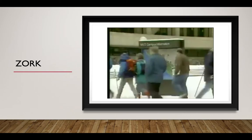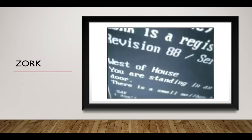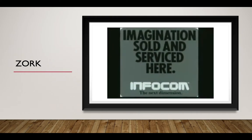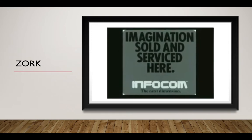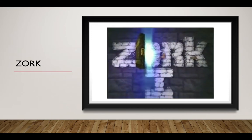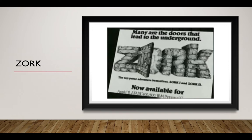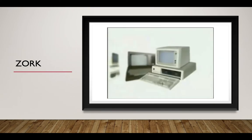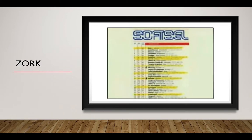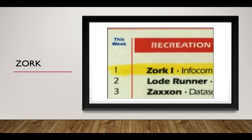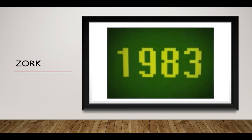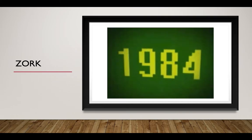Zork hooked an MIT professor who urged Lebling and others to form a company and sell it — enter Infocom. After two years of tweaks, Zork 1 hit stores in 1980 for just about every popular system: Apple, Atari, Commodore, IBM. It became the top-selling game software of 1981, '82, '83, and '84, with total sales of $20 million.